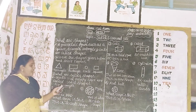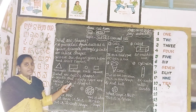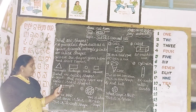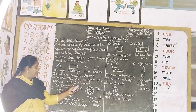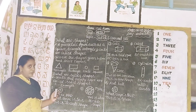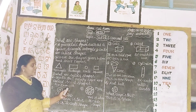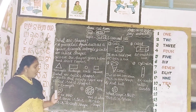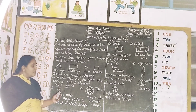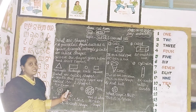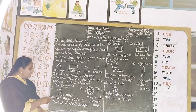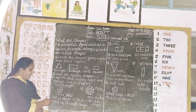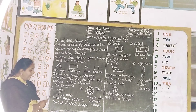What are solid shapes? Objects that occupy space are called solid shapes. For example, CD or DVD.